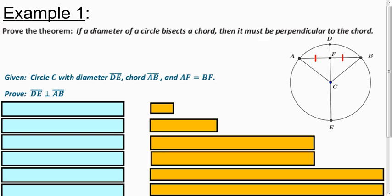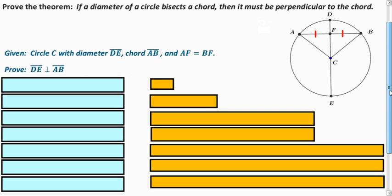So let's see how we can prove a couple of these, and then we'll apply what we learned. So we want to show that if we have a diameter bisecting a chord, that it's perpendicular to it. So we want to show that DE is perpendicular to AB, so that's what we write at the end.